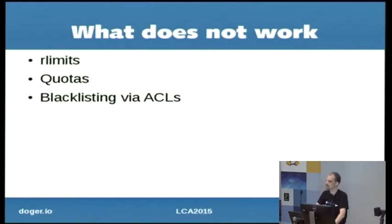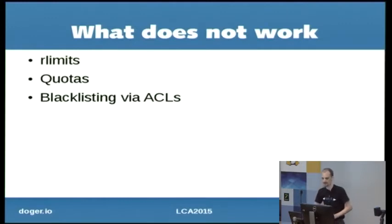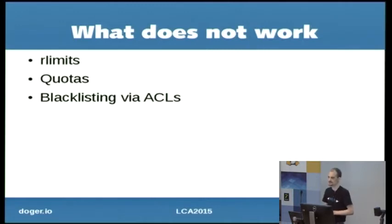Blacklisting via ACLs is also very similar. If people in the containers have the ability to swap between different UIDs, then blacklisting a single UID is definitely not going to be effective. And I found there's nothing really that useful in R-Limits for containers — there are much better subsystems I'll go into later that provide similar features.